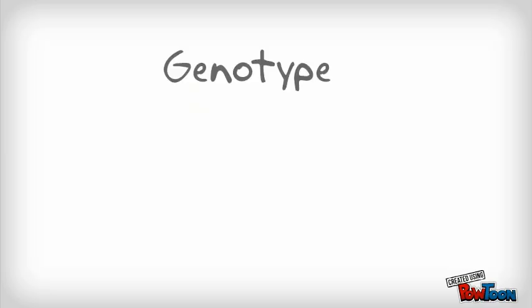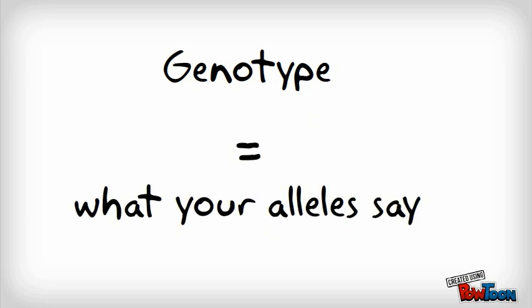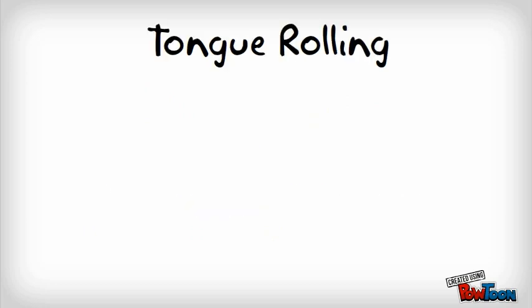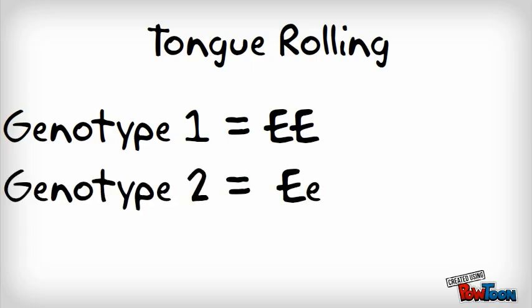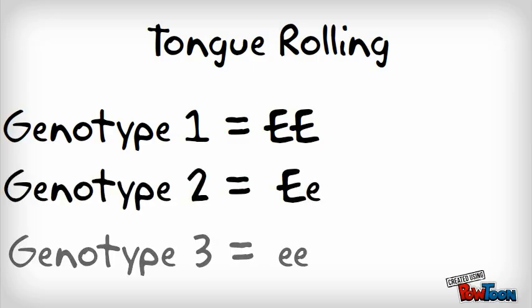The second vocabulary word you need to know is genotype. The genotype is basically what do the alleles say. In our tongue-rolling example, there are three different genotypes: big R, big R would be genotype 1; big R, little r would be genotype 2; and little r, little r would be genotype 3.